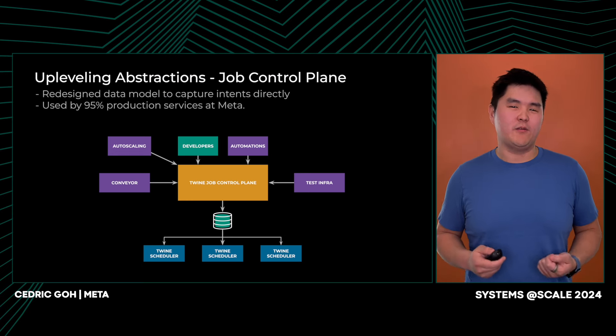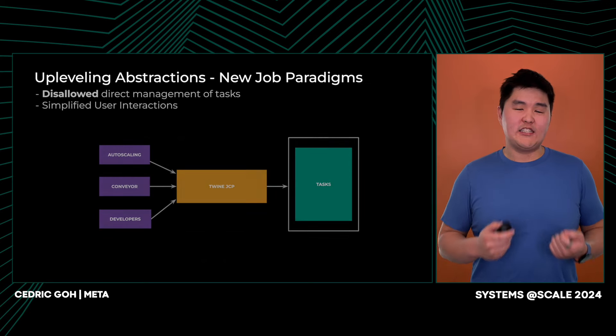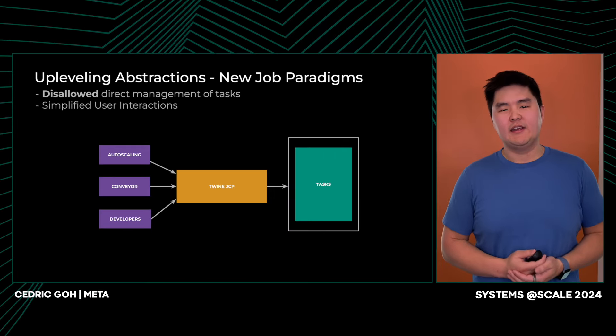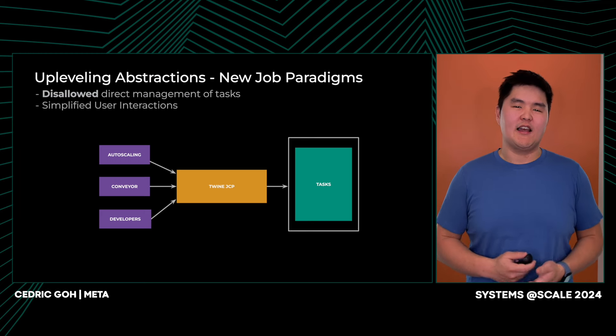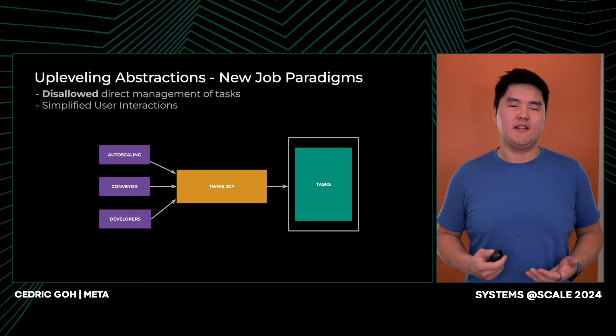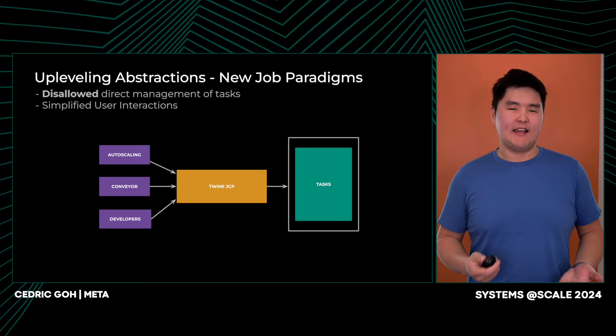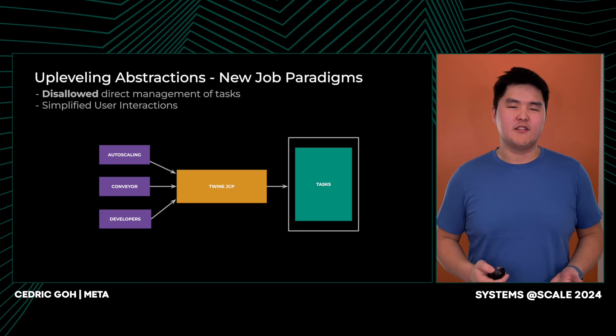Let's take a look at how higher level systems interact with Twine using the JCP. The JCP offers an up-leveled abstraction that no longer allows direct task customization from external clients. Instead, it offers structured and opinionated interfaces for higher level systems to leverage. In addition to supporting regular CRUD APIs at the job level, it also supports more advanced use cases such as partial updates based on a percentage of the overall job size or on the number of tasks. It even supports allocation-based update intents for use cases where it's important to target the underlying hardware. We acknowledge that not all use cases belong in this up-leveled paradigm, and we've worked with service owners to migrate those use cases to higher level systems such as Shard Manager, Meta's sharding platform. The result was that tasks were no longer special to Twine.